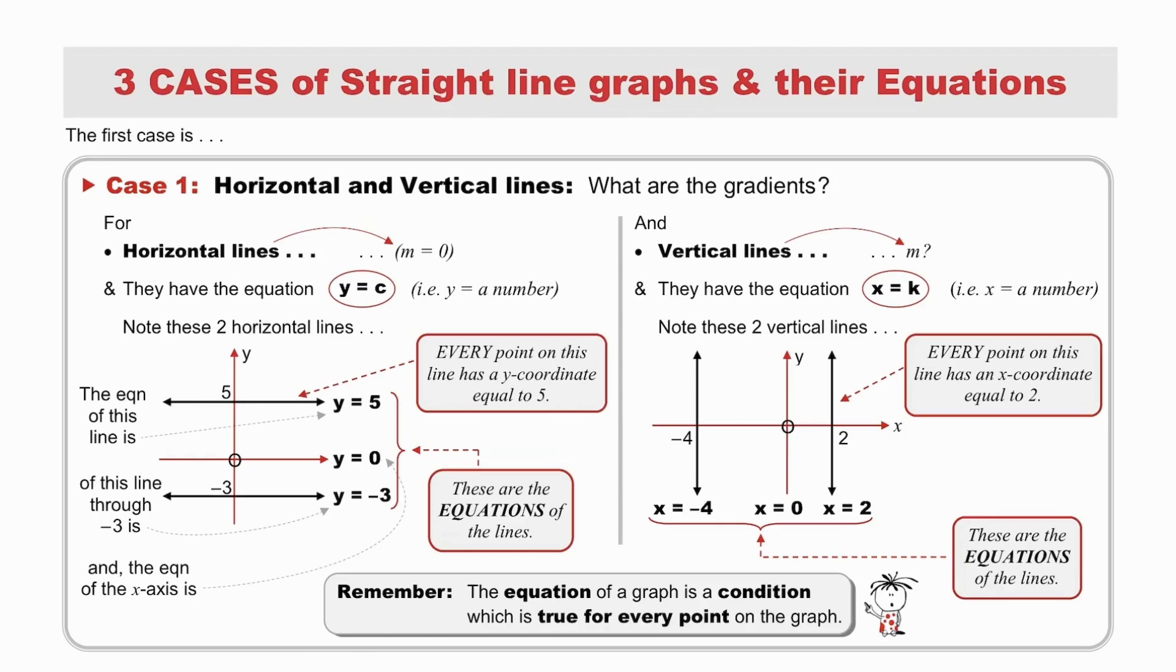Our first case of straight line graph is the horizontal and vertical lines. What are their gradients? Horizontal lines have a gradient of zero, so m equals 0, and they have the equation y equals c, i.e. y equals a number.